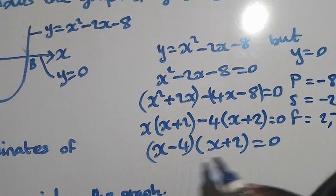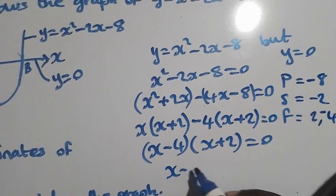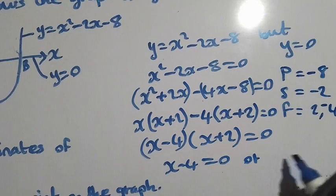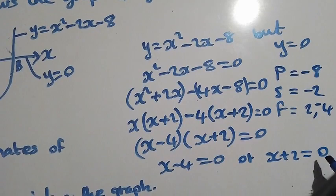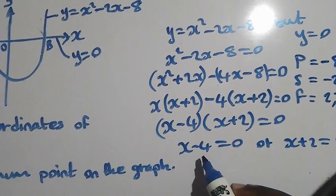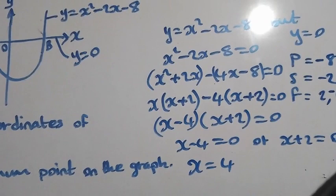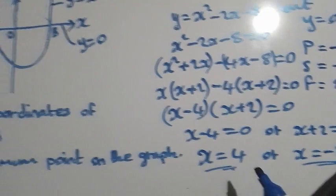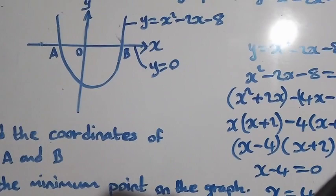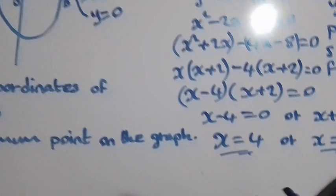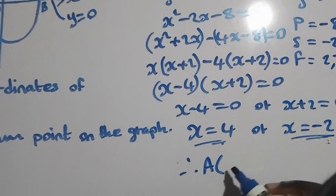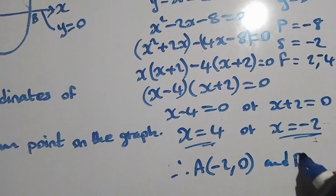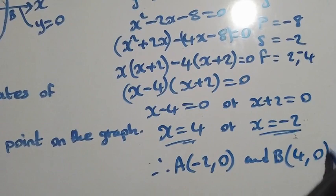At this stage, we equate each factor to 0. So x minus 4 equal to 0, or x plus 2 equal to 0. Since we are solving for x, taking negative 4 to the other side gives x equal to positive 4, or x equal to negative 2. These are the zeros. The negative value goes with point A, the positive with point B. Therefore, coordinate A is negative 2, 0, and coordinate B is 4, 0.